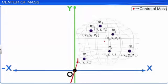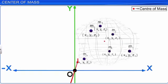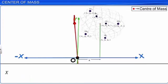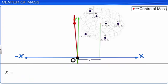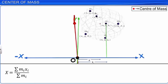If the center of mass C is represented by coordinates X, Y, and Z, then X is equal to Sigma(Mi·Xi) divided by Sigma(Mi), which is equal to Sigma(Mi·Xi) divided by M, where M is the total mass of the system.